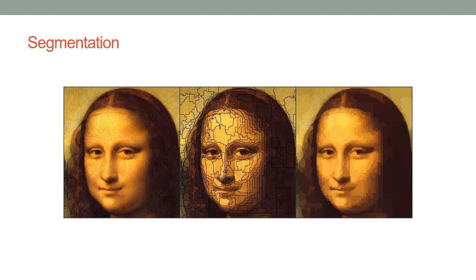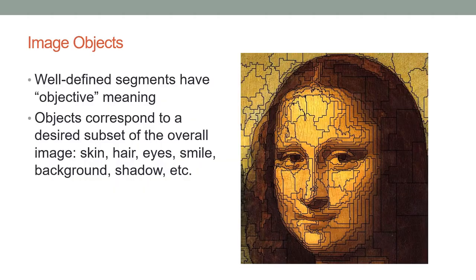Here is a graphic showing the process of segmentation using an image of the Mona Lisa painting. You can see it was segmented using a particular criterion, producing a segmented image of lower resolution than the original. Well-defined image objects or segments have objective meaning — they comprise meaningful objects. In this example, objects correspond to desired subsets of the overall image, like the skin objects, hair objects, eye components, smile components, and background shadow.